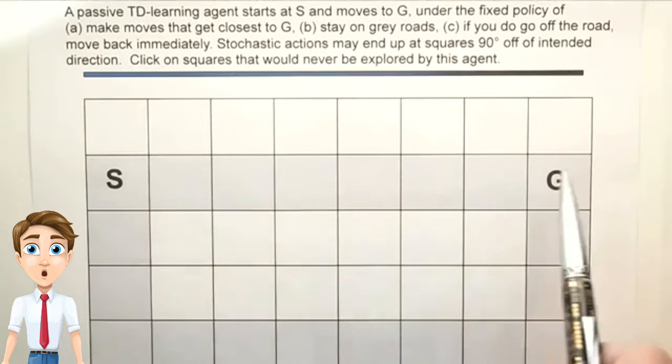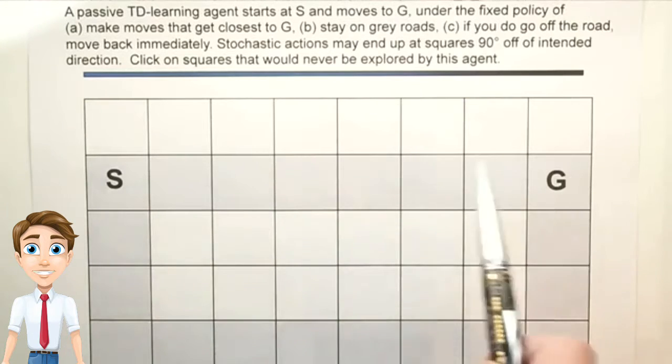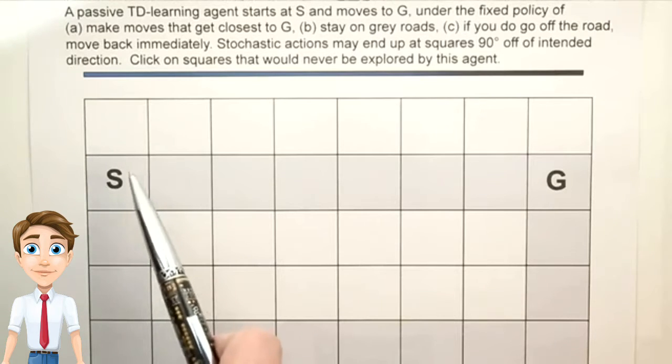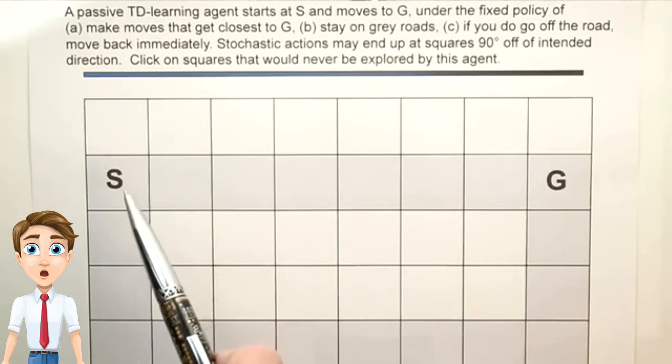And B, stay on these gray squares, which represent roads, and C, if you do happen to go off the road, then move it back onto the road immediately.